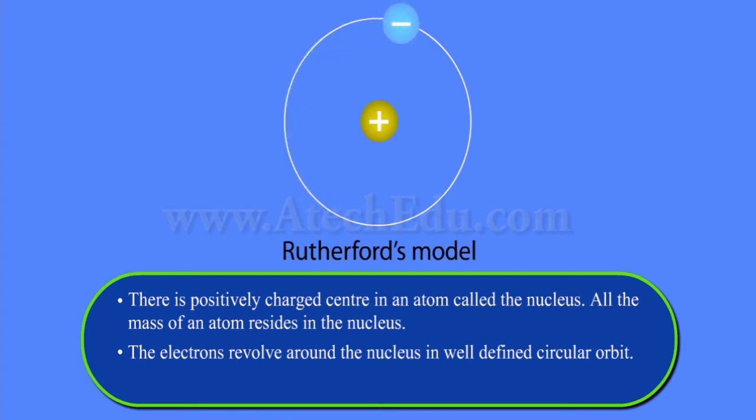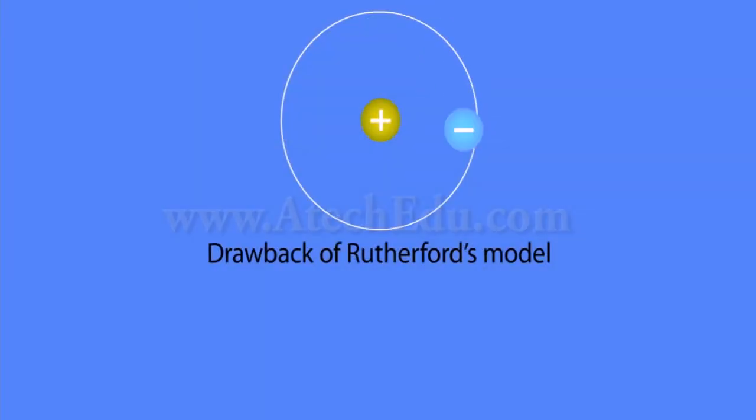Rutherford put a nuclear model of an atom. There is a positively charged center in an atom called the nucleus. All the mass of an atom resides in the nucleus. The electrons revolve around the nucleus in well-defined circular orbits. The size of the nucleus is very small as compared to the size of an atom.